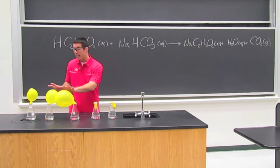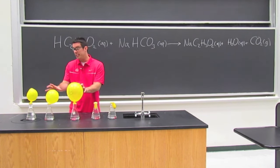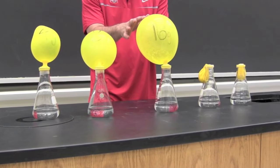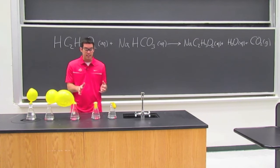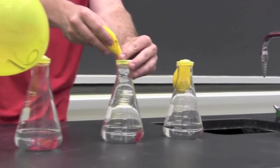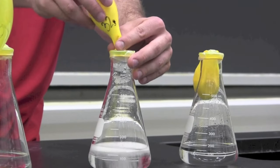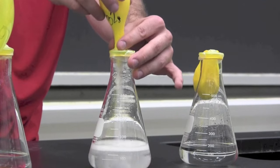So we just saw that as we went from 4 to 8 to 16 grams of sodium bicarbonate, each of the balloons got progressively bigger. Now let's take a look at the same reaction with 32 and 64 grams of sodium bicarbonate and see what happens to the relative amount of gas that's produced or the size of the balloon.